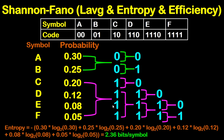Plus 0.2, which is for C, multiply by log base 2 of 0.2. Plus 0.12, which is for D, by log base 2 of 0.12. Plus 0.08, which is for E, by log base 2 of 0.08. Plus 0.05, which is for F, by log base 2 of 0.05. This will give you 2.36 bits per symbol. So this is the entropy.